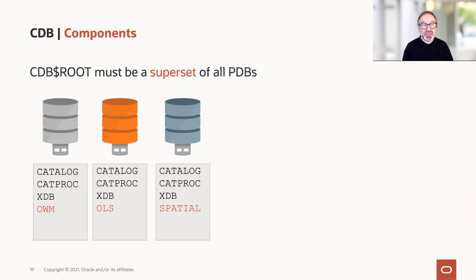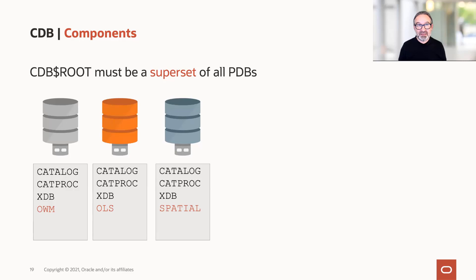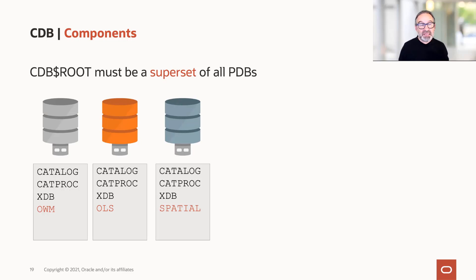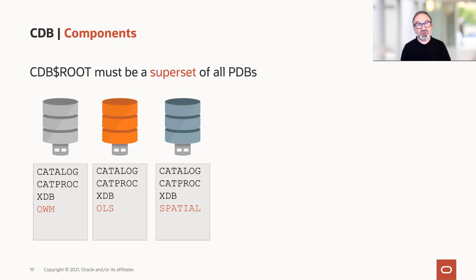Your pluggable databases, especially when there were non-CDBs before and now they should become pluggable databases and you plug them in, they may have different component sets. So when you check DBA registry, you may find that one — like my three examples — one has label security, the next one has spatial data option, and the other one has the workspace manager. If you want to plug them in, the CDB$ROOT, like the docking station for all these PDBs, must be a superset in terms of the installed components in the root container.